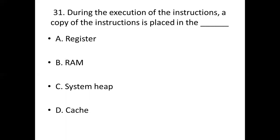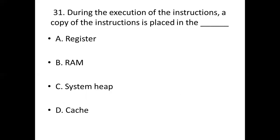Question 31: During the execution of instructions, a copy of the instructions is placed in the? Option A: register. Option B: RAM. Option C: system heap. Option D: cache. Answer: Option D — cache.